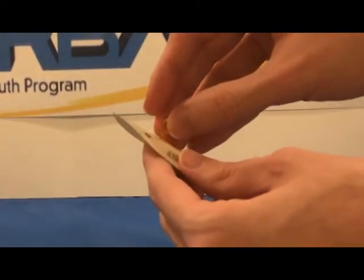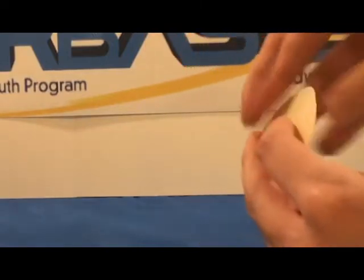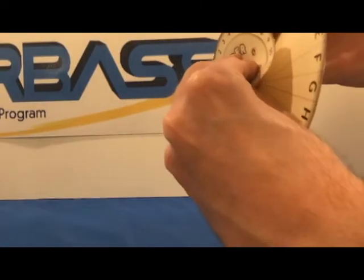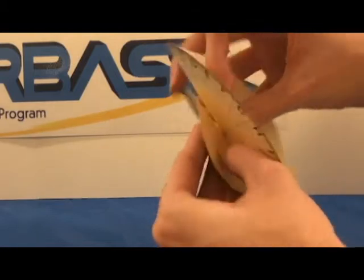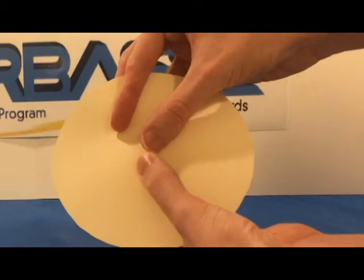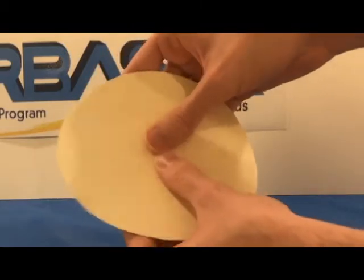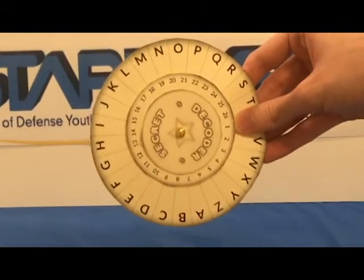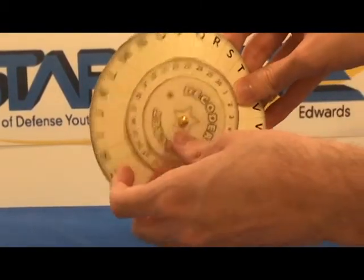Now take the brass fastener and stick it through the hole in the smallest circle. Now attach the middle circle to that, and then finally the largest circle. Now you want to bend open the prongs on the end of the brass fastener, so it's spread out like this. And your circle should be secured. You should now be able to rotate the middle portion.